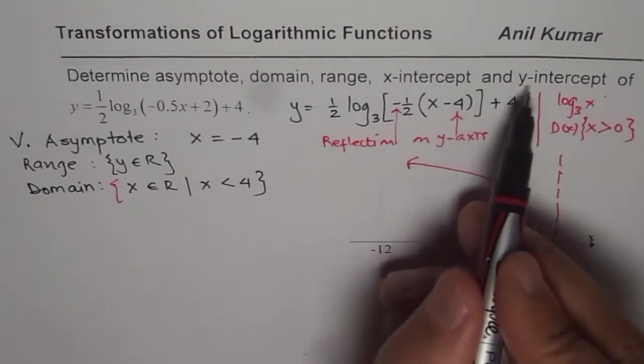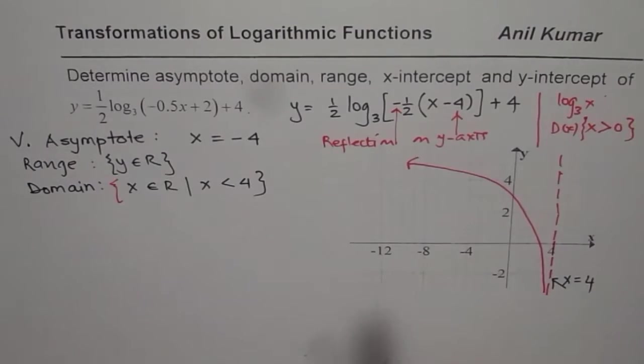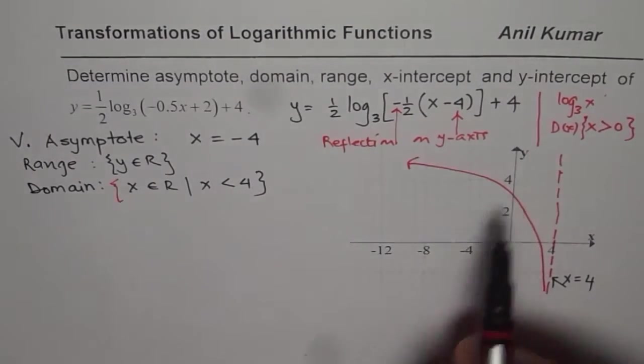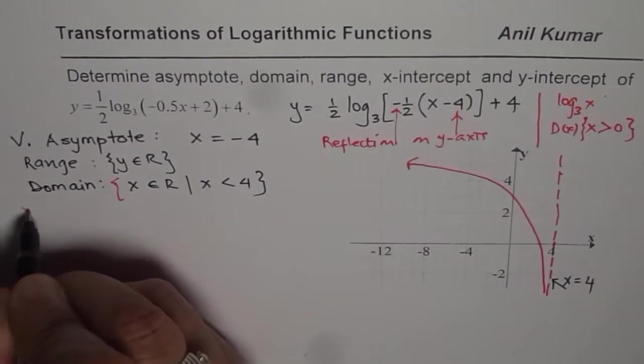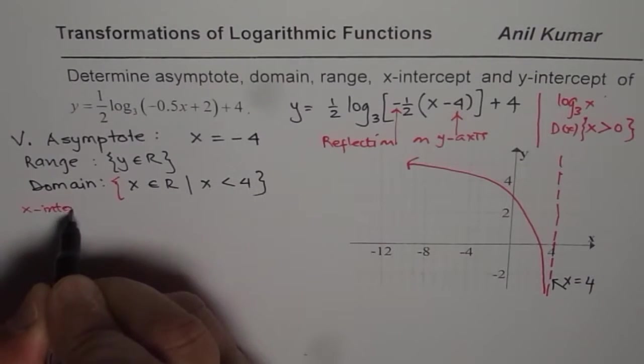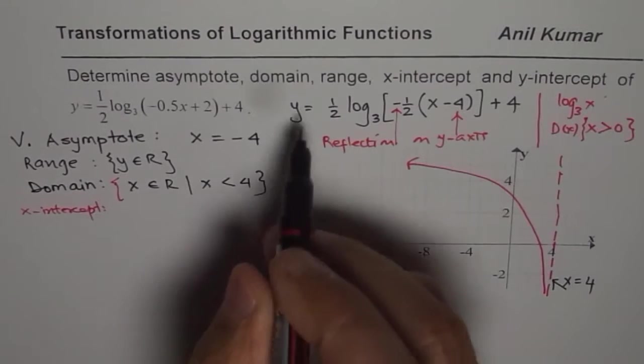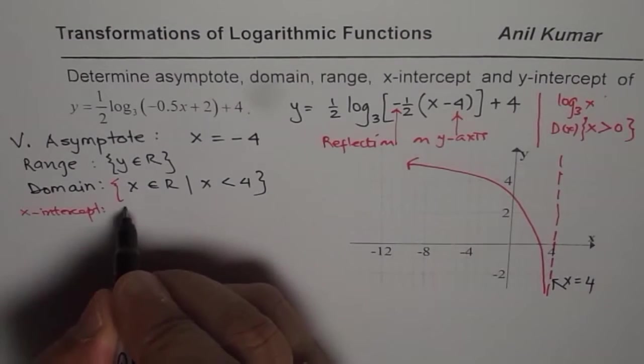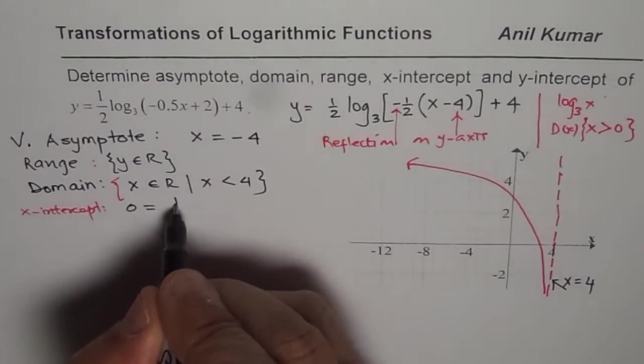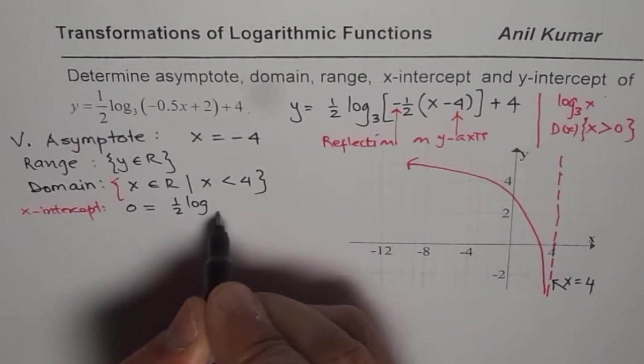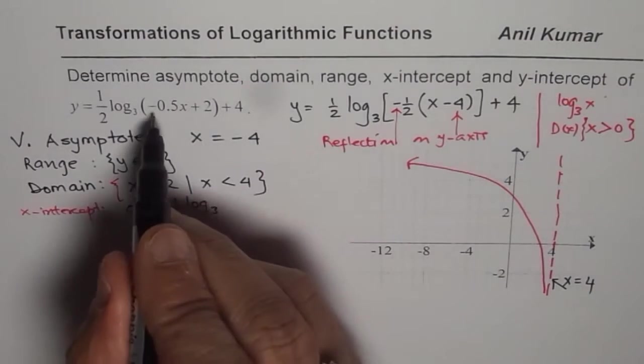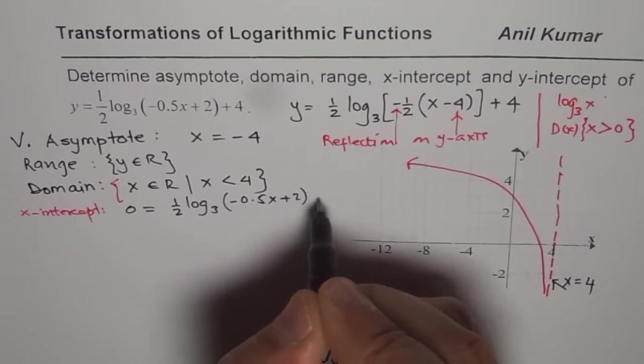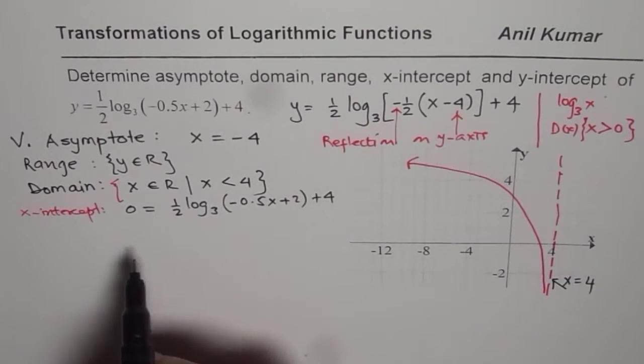Now let us find x-intercepts and y-intercepts. X-intercept is a point where y value is 0. So to find x-intercept, we have to equate y equals 0 and solve for x. So let us write this as 0 equals half of log base 3 of minus 0.5x plus 2, plus 4.